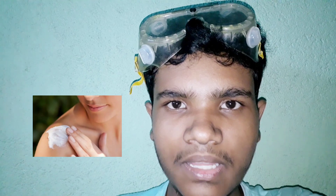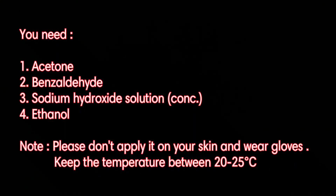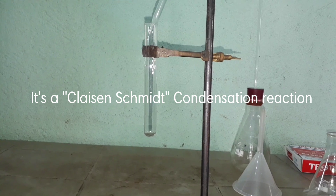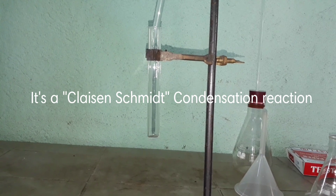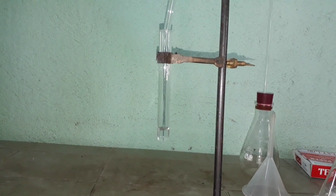Today I'm going to show you the making of di-benzyl acetone, which is the active ingredient of many types of sunscreen. All you need is acetone, benzaldehyde, sodium hydroxide, and some ethanol. About 1 ml of acetone is added in this test tube.